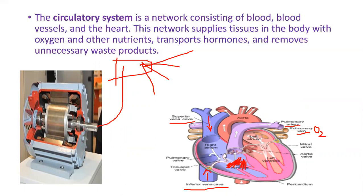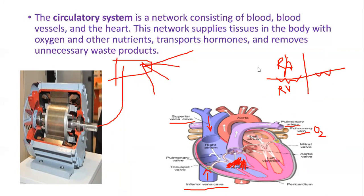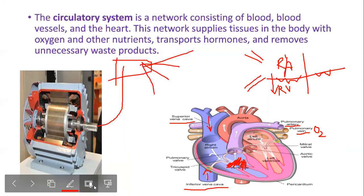This valve is called the tricuspid valve. The door between the right atrium and right ventricle is the tricuspid valve, and the door between the left atrium and left ventricle is the bicuspid valve. These valves act like doors — when the right atrium contracts, the tricuspid valve opens, allowing blood to flow into the right ventricle. Once the right ventricle is full, this valve closes.